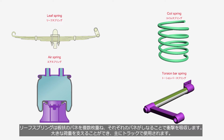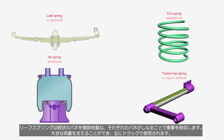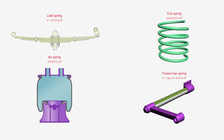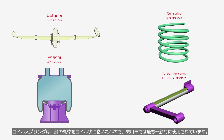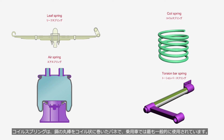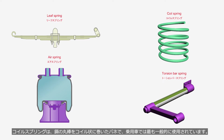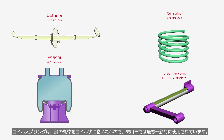Leaf springs consist of multiple layers of flat springs stacked together, and each spring flexes to absorb shocks. Leaf springs are capable of supporting heavy loads and are primarily used in trucks. Coil springs are formed by coiling spring steel and are the most commonly used type of suspension spring in passenger cars.